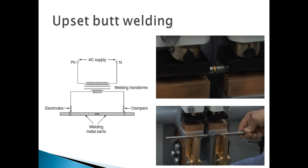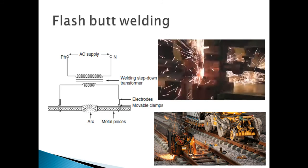The difference between flash butt welding and upset butt welding is that in flash butt welding, after connecting the two metals, a small distance is gradually created between them so that an arc forms. After arc formation, the metal gains high temperature, causing melting of the material. Flash butt welding is used for joining train rail lines.